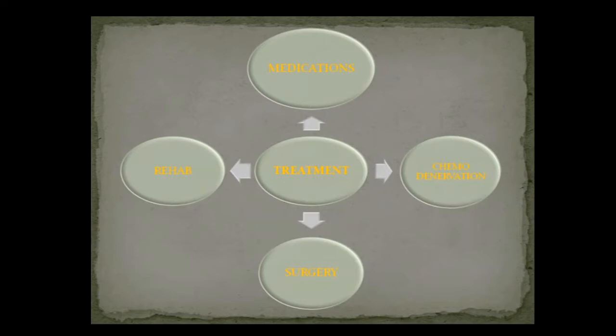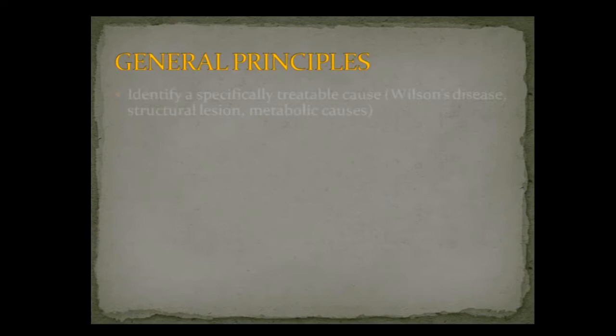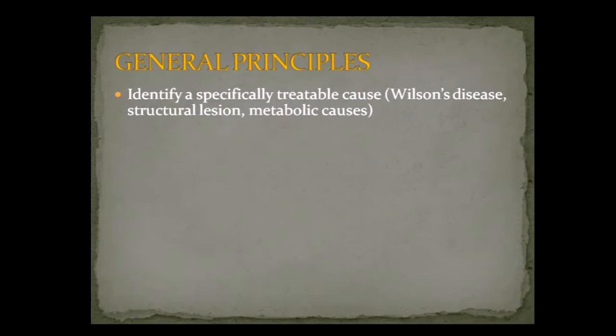Jumping to treatment. We have defined dystonia and learned different classifications. There are four main treatment arms: medications, rehabilitation, chemodenervation, and surgery. You first try to identify the cause — there are a lot of etiologies. Try to find anything treatable: Wilson's disease, structural lesion, or metabolic disorders. If not found, talk to the family about family history and consider genetic counseling. Establish goals — you may not achieve optimal control. Always address comorbidities: depression and orthopedic complications, since many with chronic dystonias will eventually have contractures and vertebral column issues.